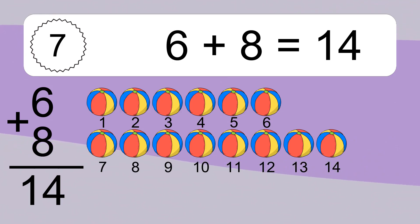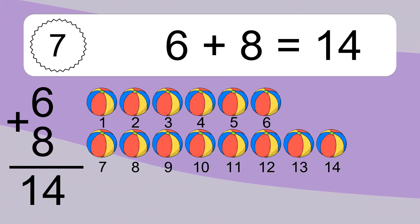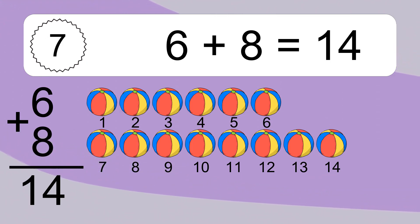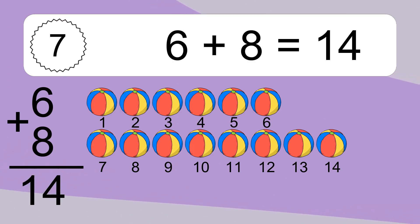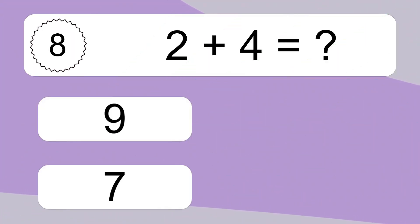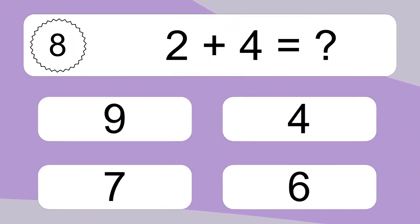Let's count it again: 1, 2, 3, 4, 5, 6, 7, 8, 9, 10, 11, 12, 13, 14. 2 plus 4 equals what?